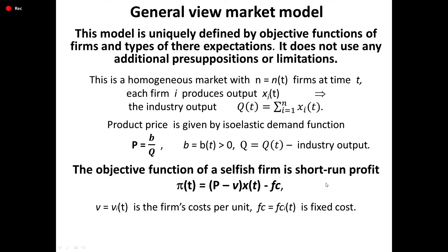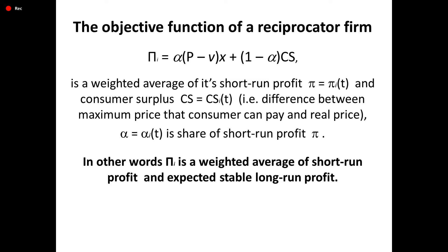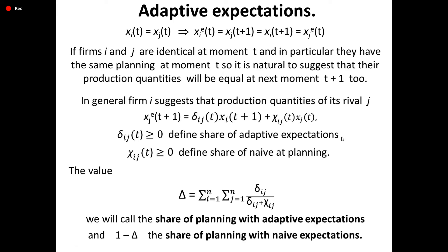The objective function of a selfish firm is short-run profit: Pi(t) = (P - V(t)) * X - Fc, where V(t) is the firm's cost per unit and Fc(t) is fixed cost. The objective function of a reciprocator firm is Pi = alpha*(P - V)*X + (1 - alpha)*Cs, a weighted average of its short-run profit Pi(t) and consumer surplus Cs_i(t) — the difference between the maximum price a consumer can pay and the real price. Alpha = alpha_i(t) is the share of short-run profit.